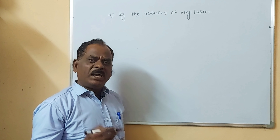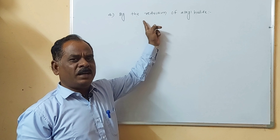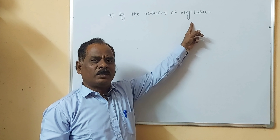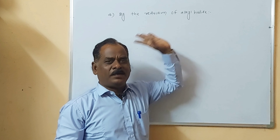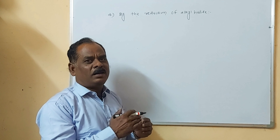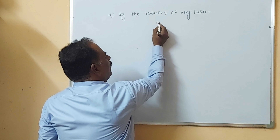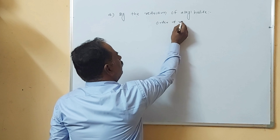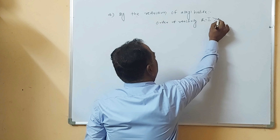The next method for the preparation of alkane is by reduction of alkyl halide. This is the fourth method. Reduction of alkyl halide means hydrogen atom is added onto the alkyl halide. Remember the order of reactivity of alkyl halides: RI is more reactive than RBr, and RBr is more reactive than RCl.